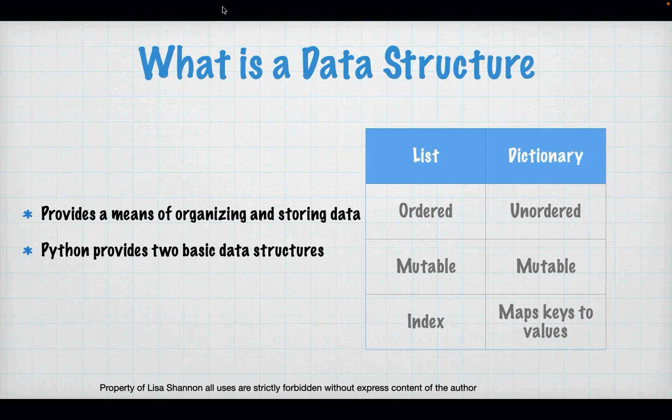There are some main differences between a list and a dictionary. A list is ordered, mutable, and has an index. A dictionary is unordered, it's mutable, and it maps keys to values — it does not have an index.